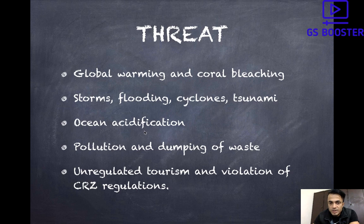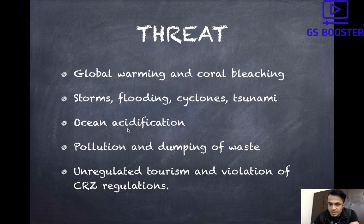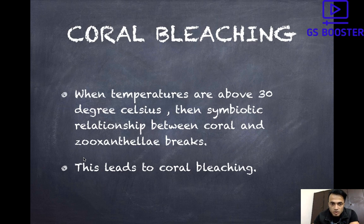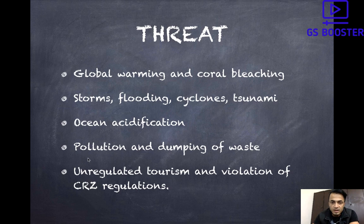Ocean acidification also causes coral bleaching. Due to global warming, CO2 concentration in the air increases. Some of that CO2 gets absorbed into the ocean, where it reacts with H2O to form carbonic acid, leading to ocean acidification. This carbonic acid acts as a threat to coral reefs and also causes coral bleaching. Additionally, in coastal areas where there are beaches and infrastructure development, significant pollution occurs. Plastics, untreated nutrients, and industrial waste are dumped there — especially from tourist spots, beaches, and coastal industries and mining areas. This pollution definitely becomes a threat to corals.